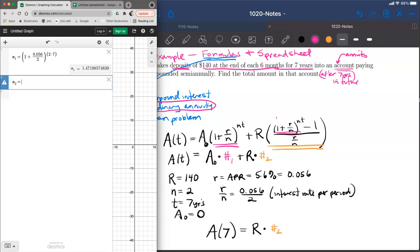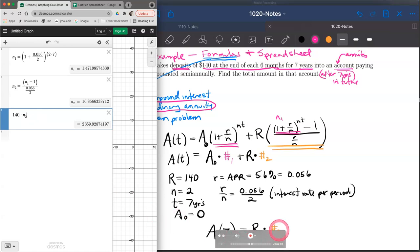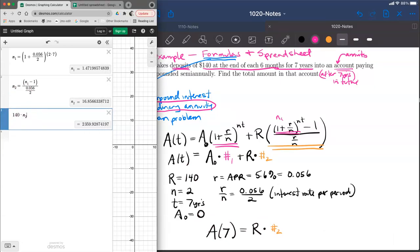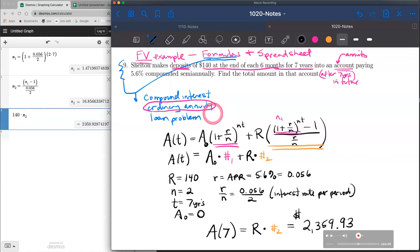Number 2 is (n1 minus 1) divided by the interest rate per period, 0.056 divided by 2. So the amount in the account after seven years is $140 multiplied by the n2 value. This formula is what we've done in Desmos, which tells us the amount after seven years is $2,359.93. That's using the formulas to compute the amount.